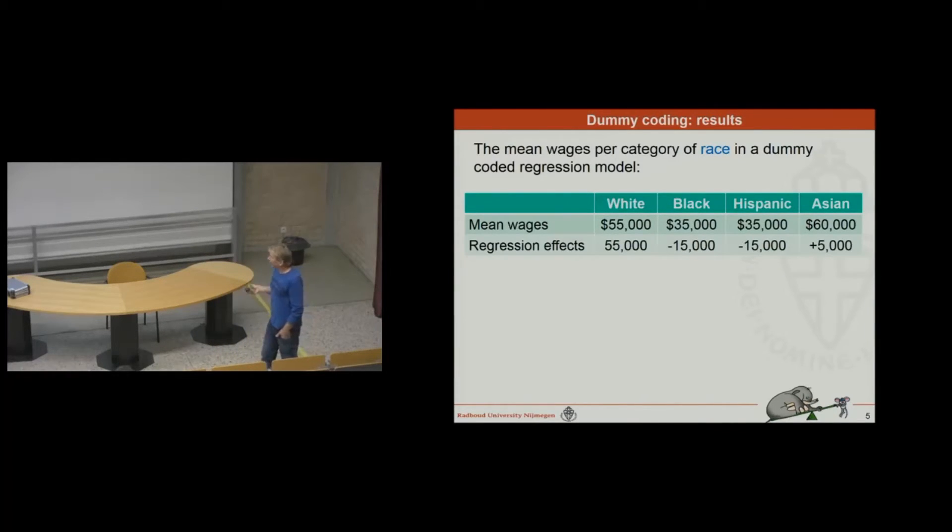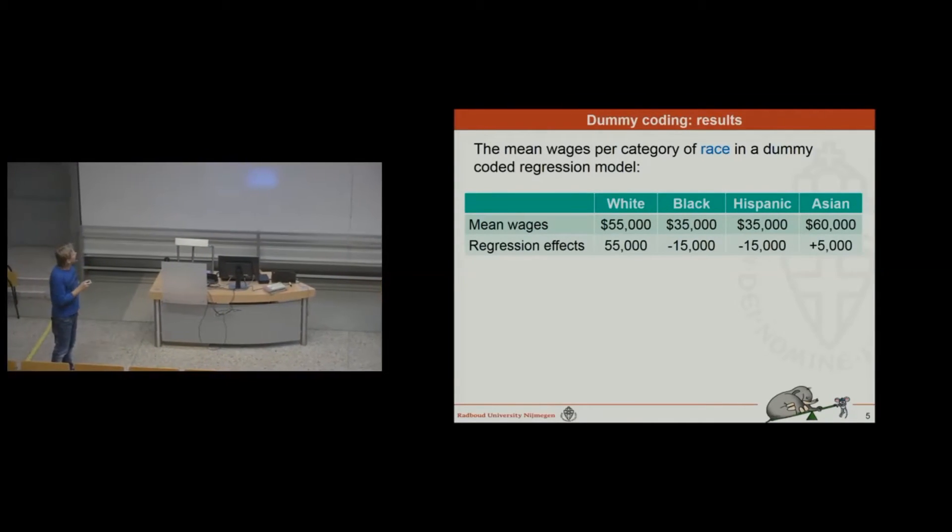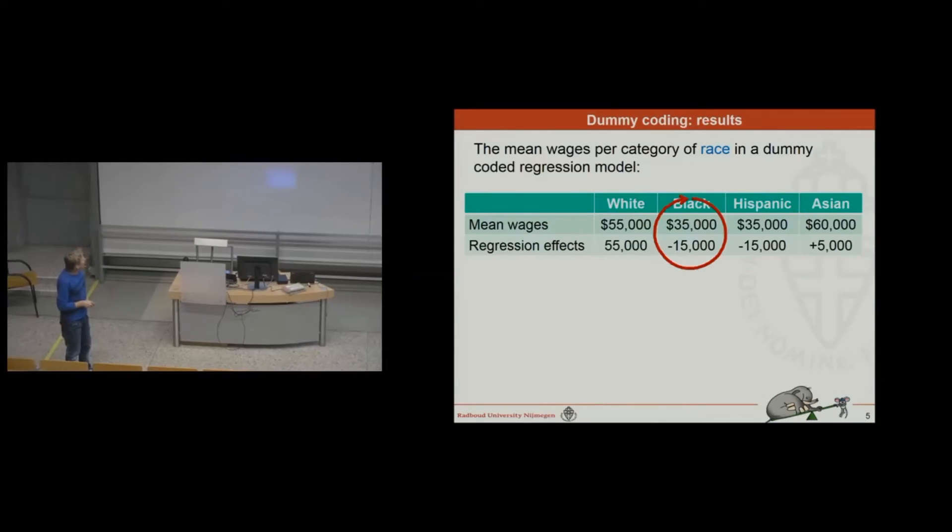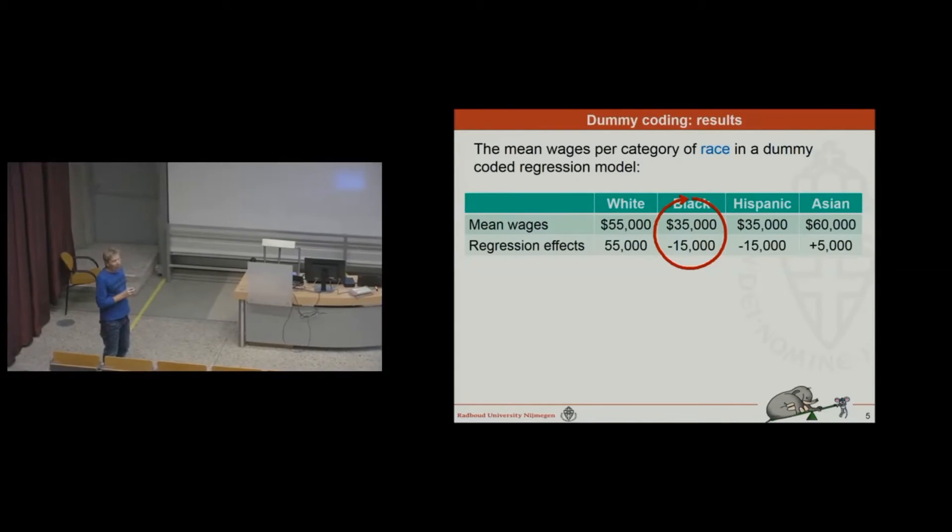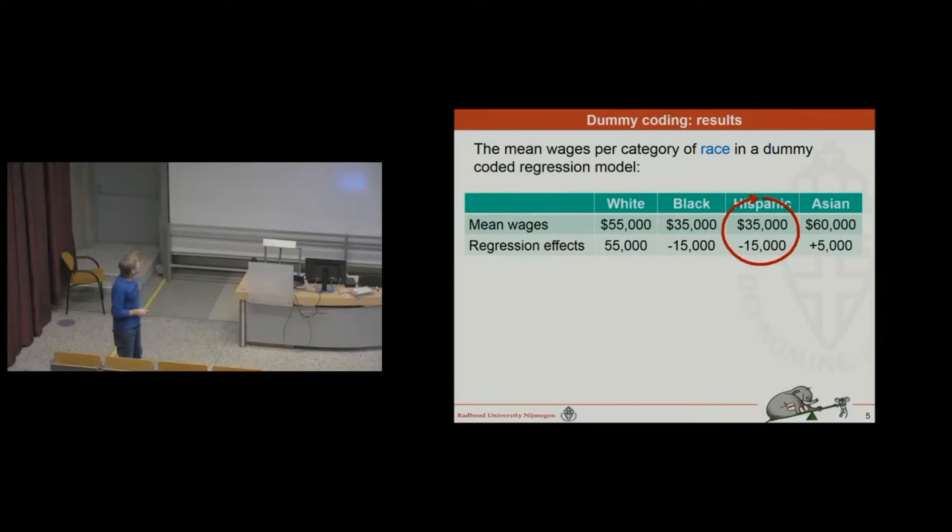Now, if we take a look at the regression effects, the regression equation I just showed you, then we have B1 over here, and it's 55 grand. It's equal to the mean wage we have over here. And here we have the mean wage of the black population, which is 35 grand, and the difference between 55 and 35 is 20. So we get, as a result, the regression effect will be minus 20. Same goes for the Hispanics, also 20. And for the Asians, it's 5. I did that correctly, plus 5. So these are the results of the regression equation.